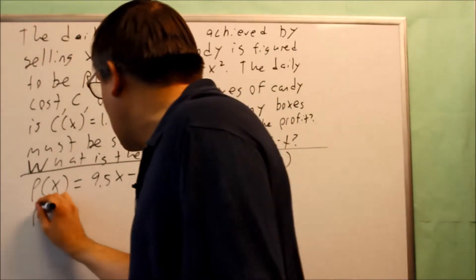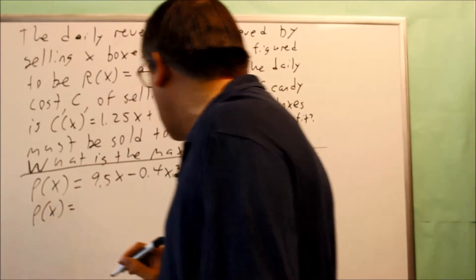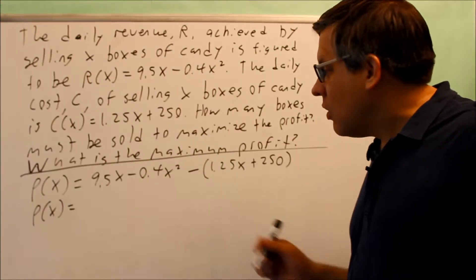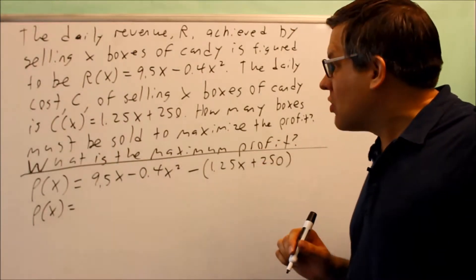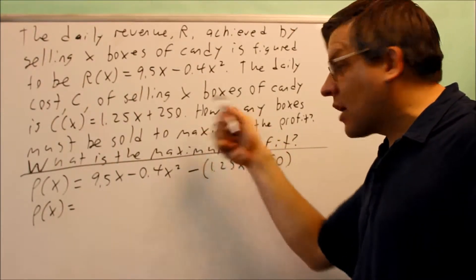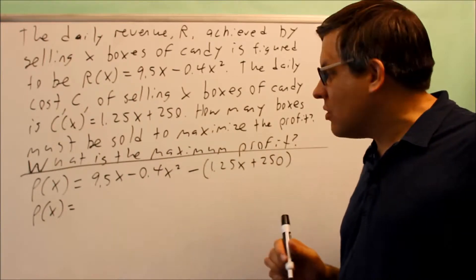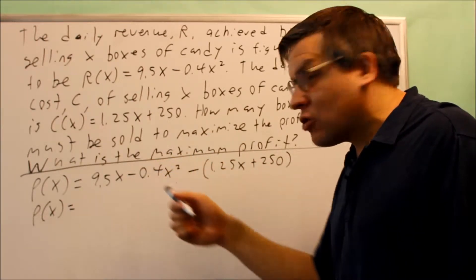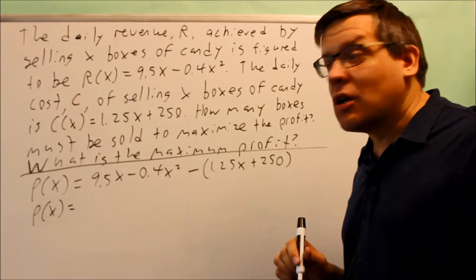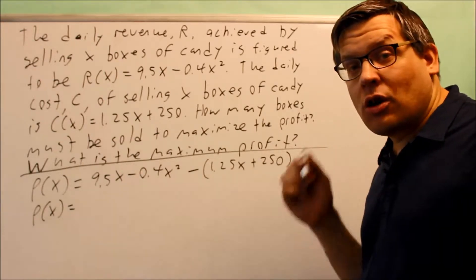That's going to allow us to get the profit equation and that's the one that we're going to use with the vertex formula. Because the word maximize is in there, so that tells us we have to get a quadratic and use negative b over 2a to find the x-coordinate of the vertex.